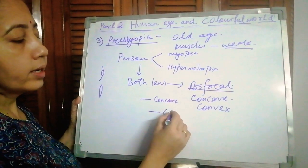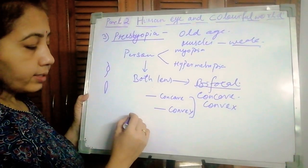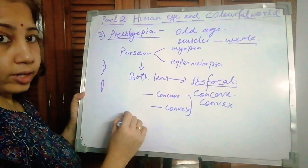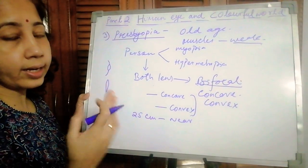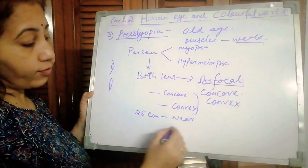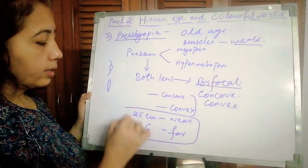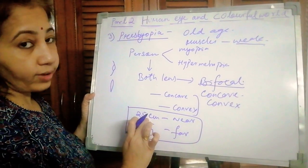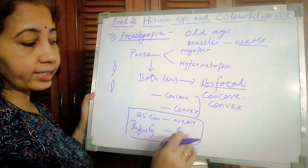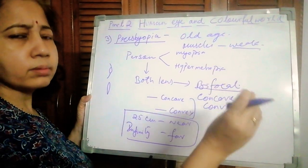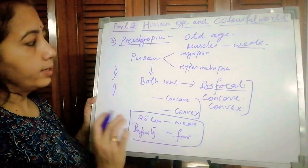Presbyopia is also called old-age hypermetropia — a condition in which the lens is not able to contract or relax. The bifocal lens has a concave part and a convex part; the lower part should be convex. In this condition, the near point — which is normally 25 centimeters — shifts farther away, and the far point, normally at infinity, reduces to just a few meters or centimeters.